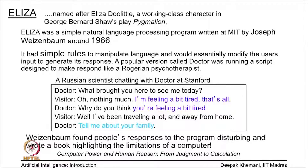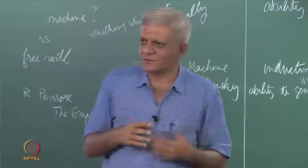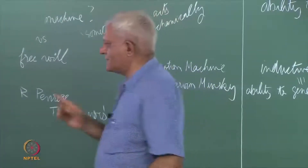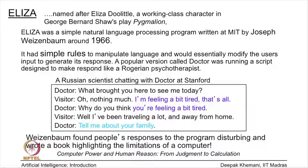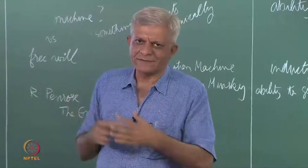There is a story of a Russian scientist visiting Stanford who was running a version of this program. After the conversation, he started pouring out all his woes to the program. And Weizenbaum found that his secretary was talking to this program all the time, and she was quite furious when she found out that Weizenbaum had access to those conversations.